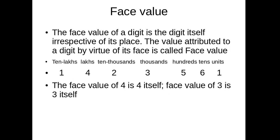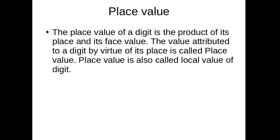Now, place value. The place value of a digit is the product of its place and its face value. You know the face value and then the place — you have to multiply both. That means, the value attributed to a digit by virtue of its place is called place value, and the place value is also called the local value of the digit.